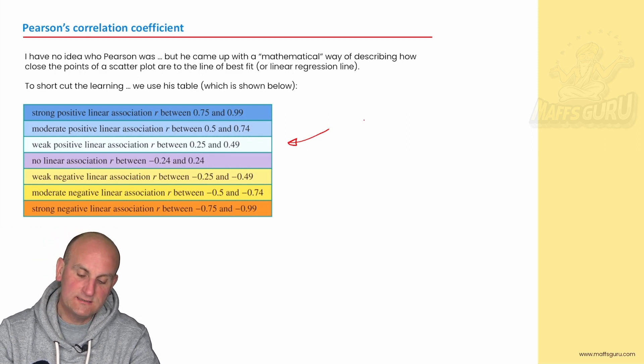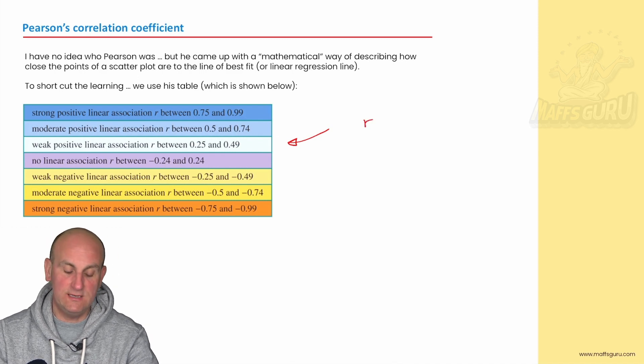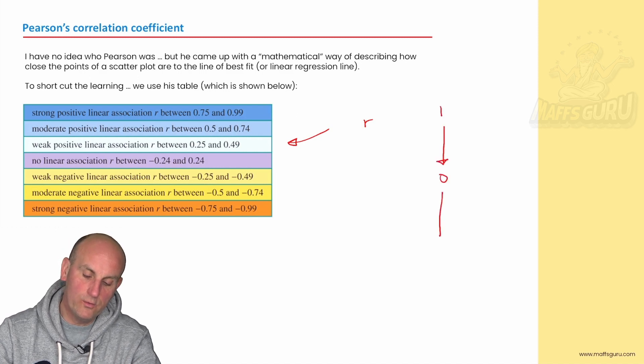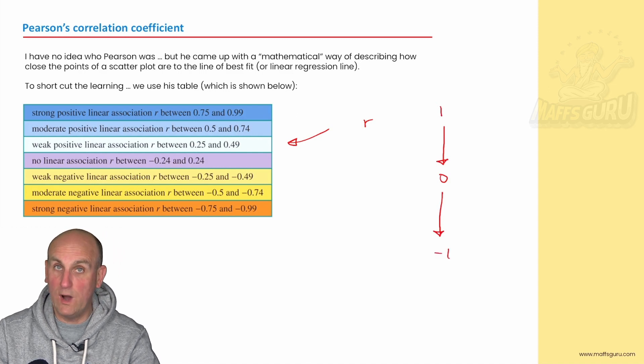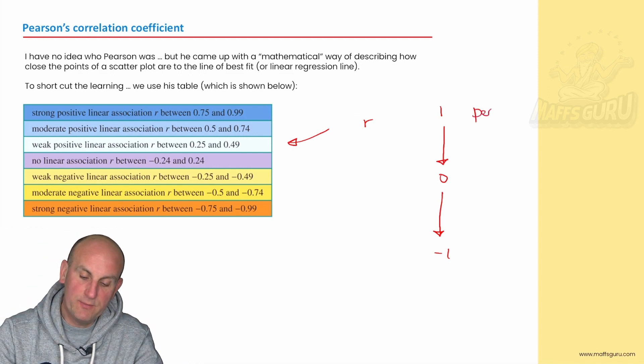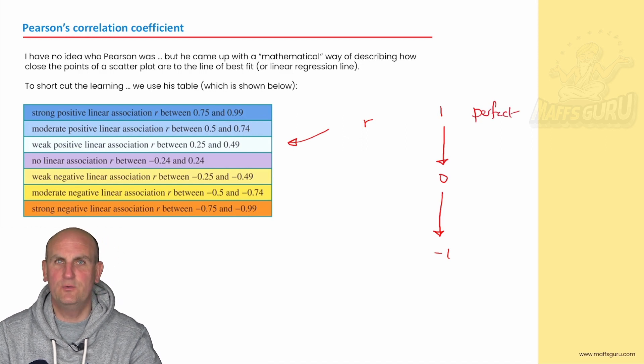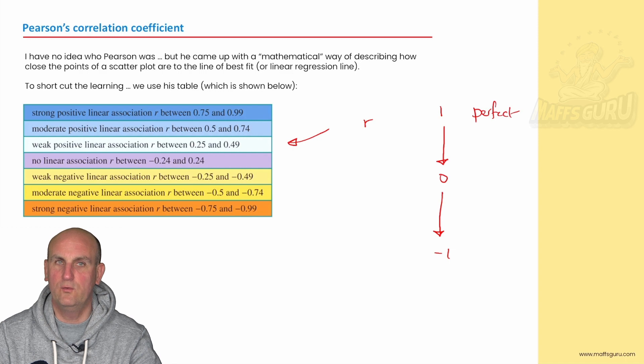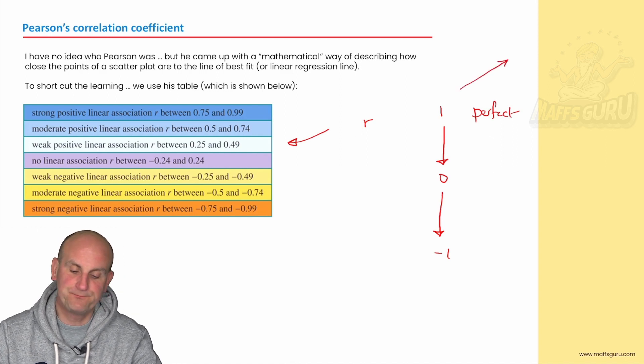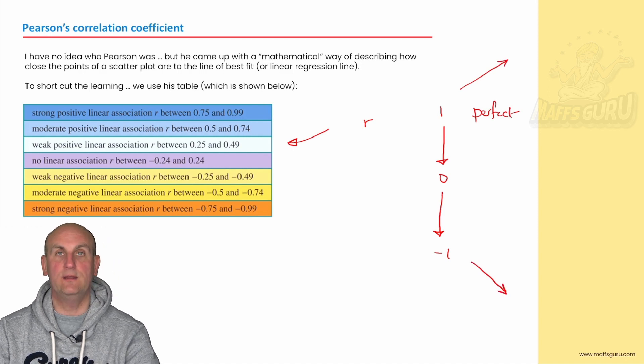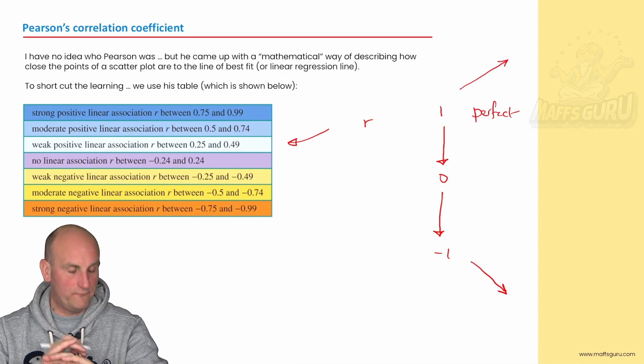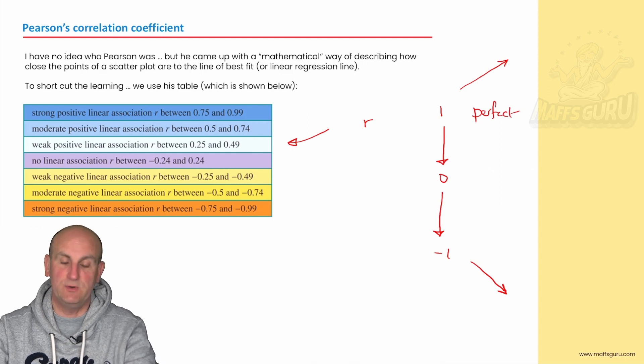The value of Pearson's correlation coefficient is given by R. What you need to notice is the value of R goes from the number one through zero, all the way down to negative one. If it's a one, it means that all of the points are in a perfect straight line. But minus one means all the points are in a perfect straight line as well. So what's the difference? A one means they are in a perfect straight line going up, and a minus one means they are in a perfect straight line going down. If you want to download these notes from mathsguru.com, sign up for free, and then you can write all over them as I am talking, or just put it in your summary book.